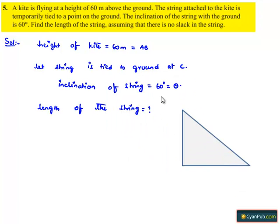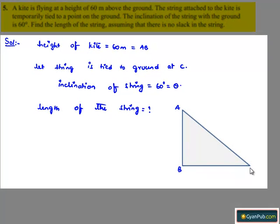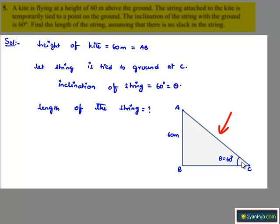Here we assume that AB is the height of the kite, and C is the point where the string of the kite is tied. At C, angle theta is equal to 60 degrees with the horizontal. The height of the kite where it is flying is given as 60 meters, and we are asked to find the length of the string. Therefore, if we observe the figure, the length of the string is nothing but AC.